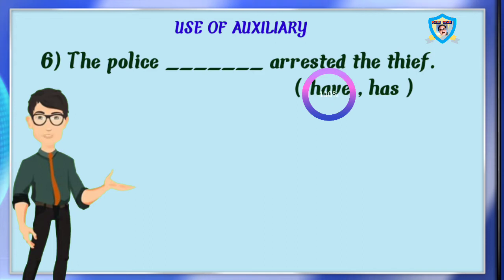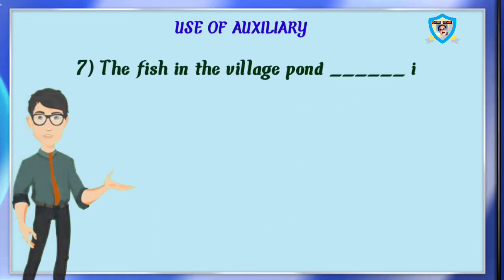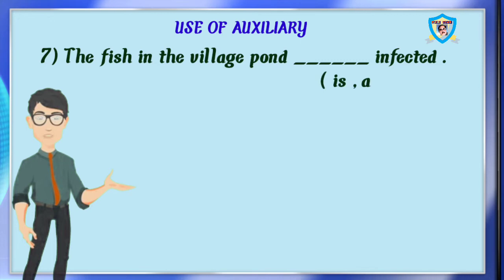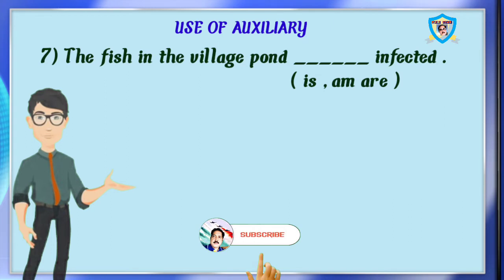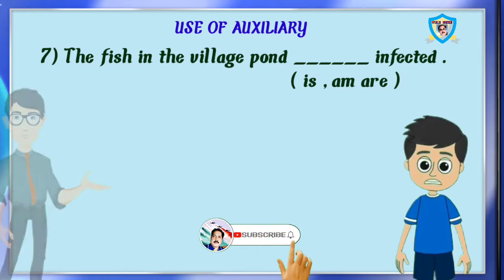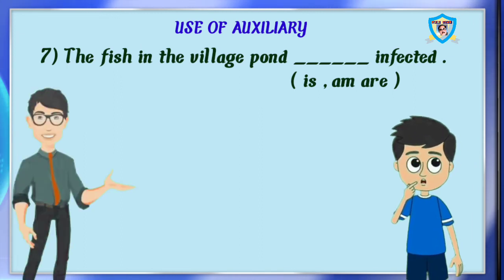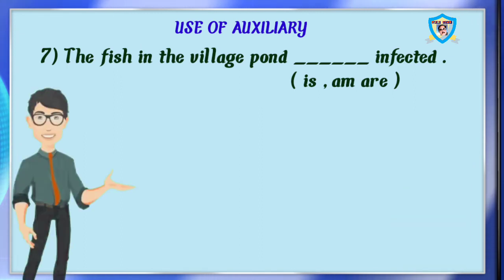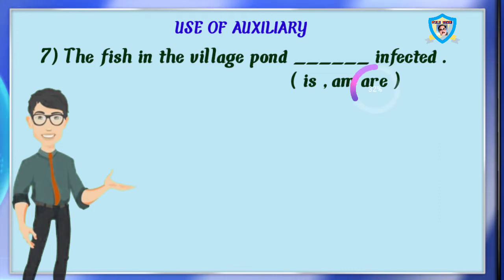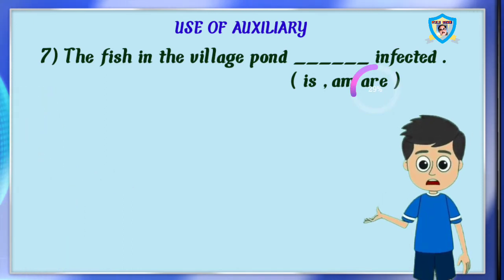Question 7: the fish in the village pond dash infected. Options are is, am, are. Which is the right answer? It is is. No, it is wrong. The fish in the village pond are infected. Here, fish is in plural form — there are so many fish in the village pond, so we have to use are.